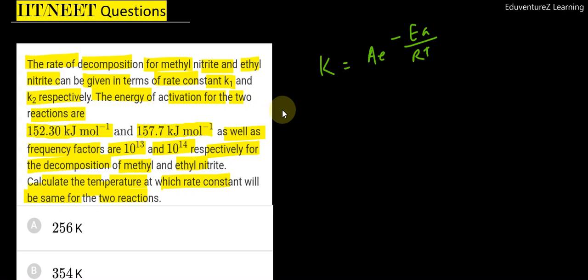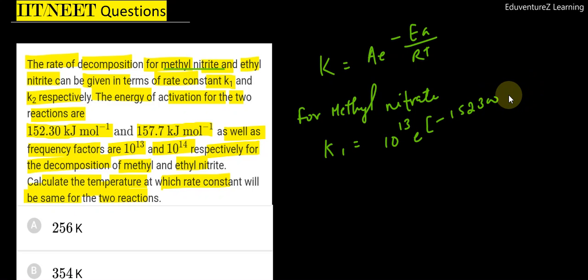And what is the value for methyl nitrate? For methyl nitrate, K1 equals 10 to the power 13 E minus 152300. If we convert kilojoule to joule and put the R value, this is 8.314 and temperature value is T.